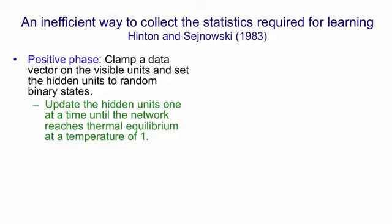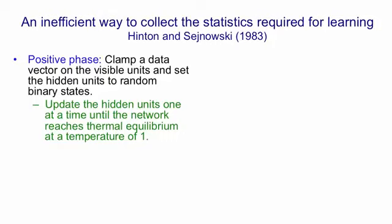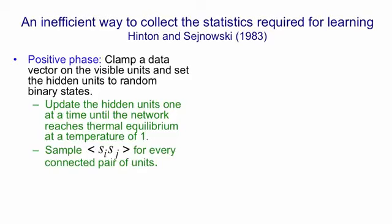And then you keep updating the hidden units in the network, one unit at a time, until the network reaches thermal equilibrium at a temperature of one. We actually did that by starting at a higher temperature and reducing it, but that's not the main point here. And then once you reach thermal equilibrium, you sample how often two units are on together. So you're measuring the correlation of i and j, with that visible vector clamped. You then repeat that over all the visible vectors, so that that correlation you're sampling is averaged over all the data.